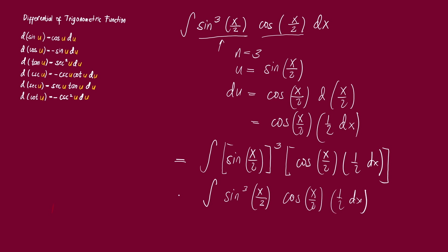This function is not exactly equal to the original because of the one-half term — the one-half is not present in the original function. To get rid of it, we multiply the whole function by 2, so that 2 times one-half equals 1, canceling the one-half out. Now it is equal to the original function.